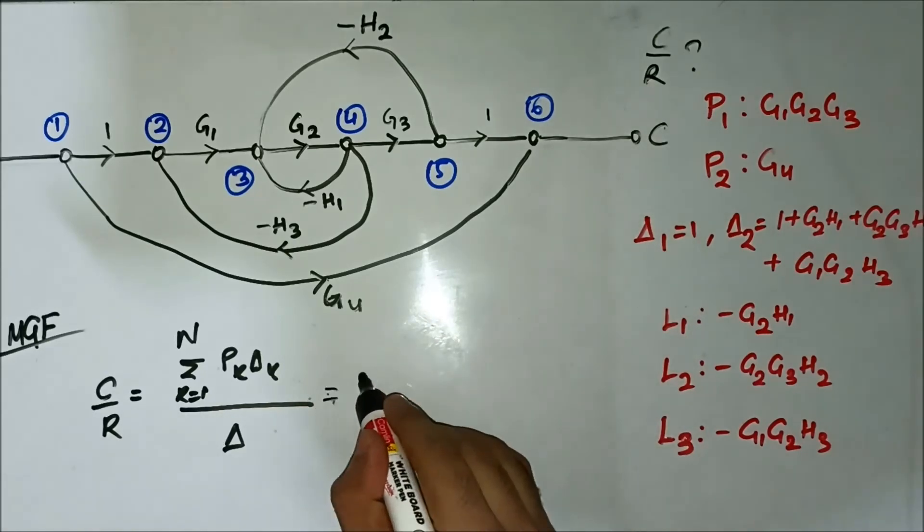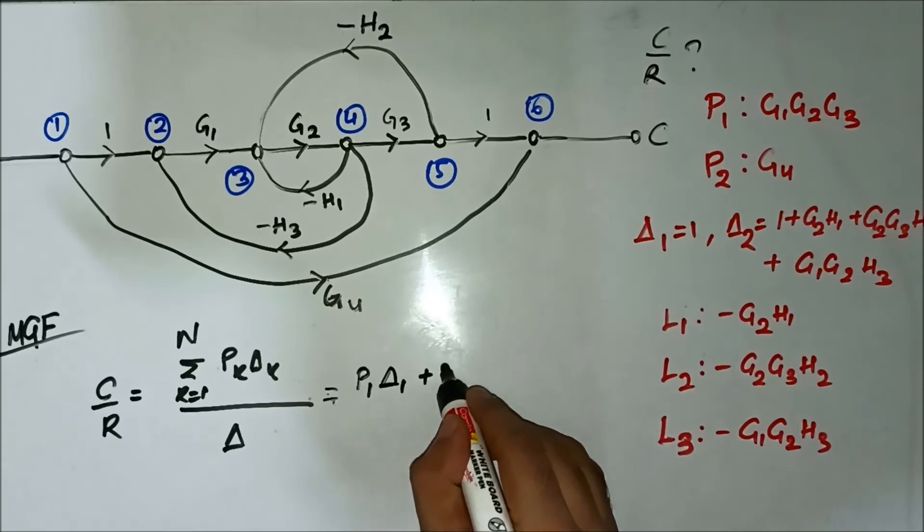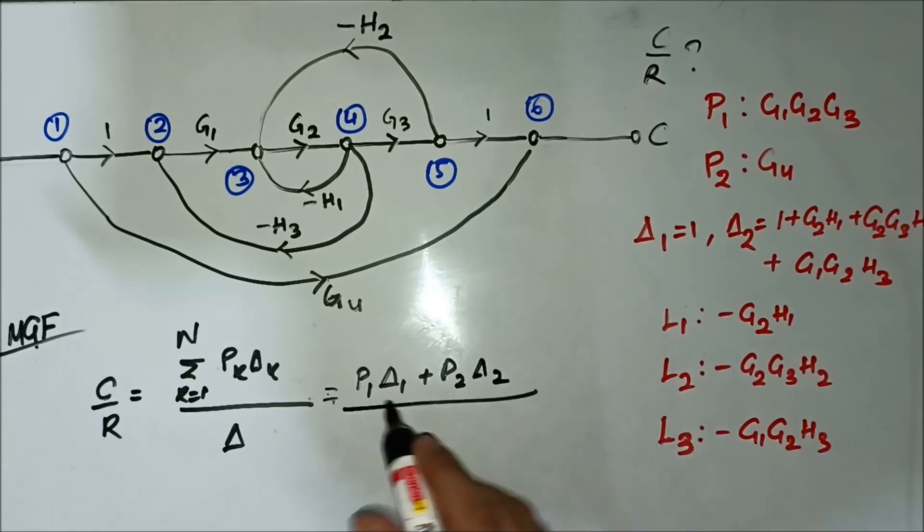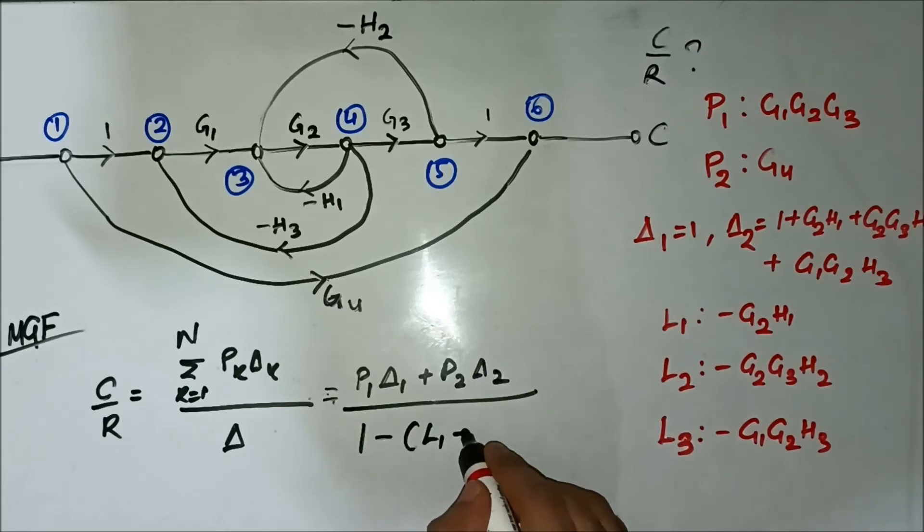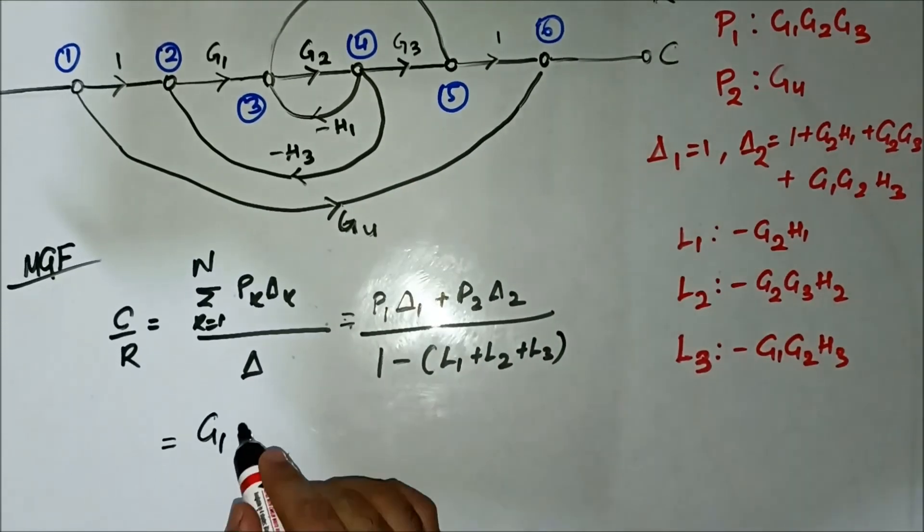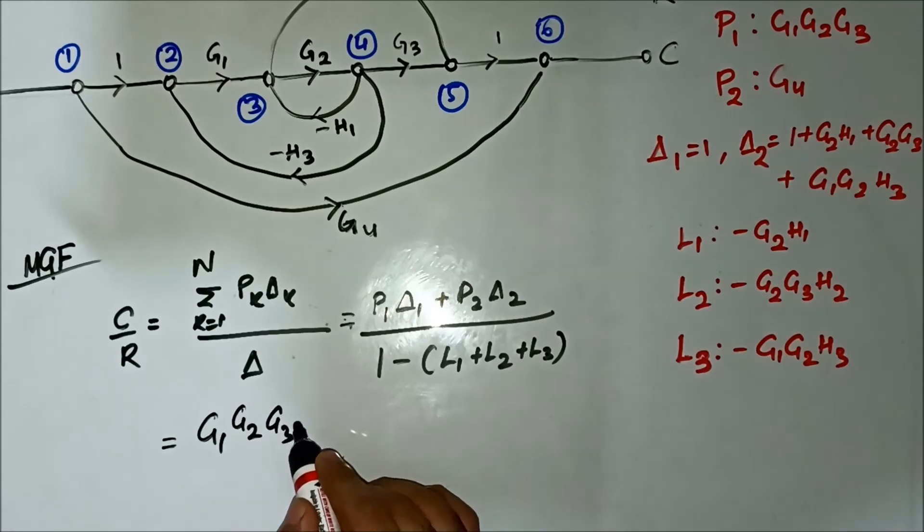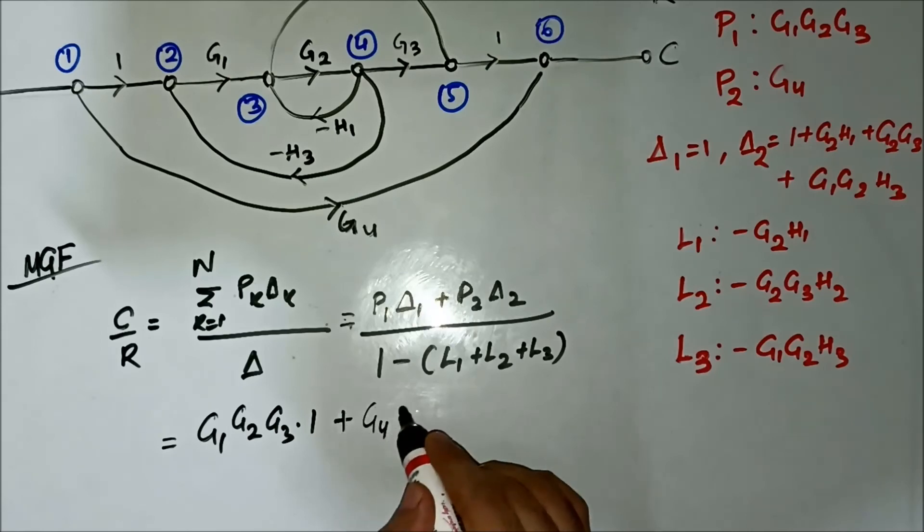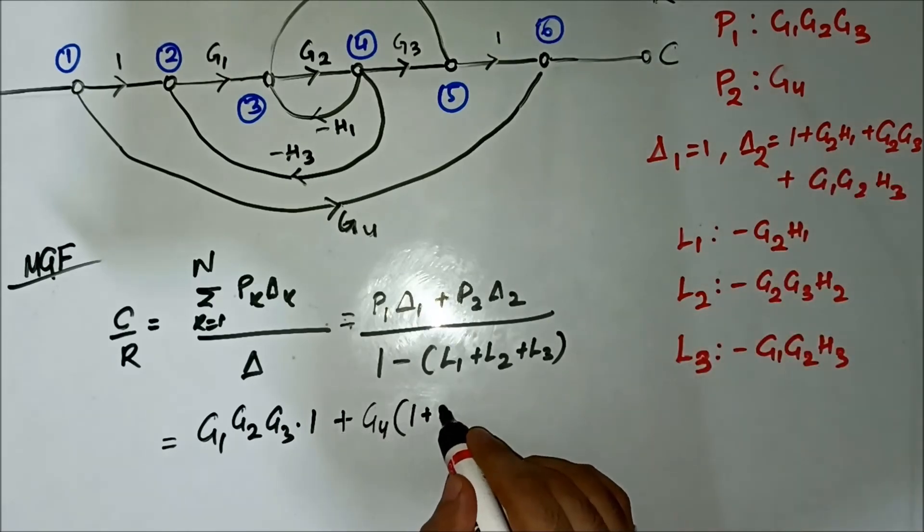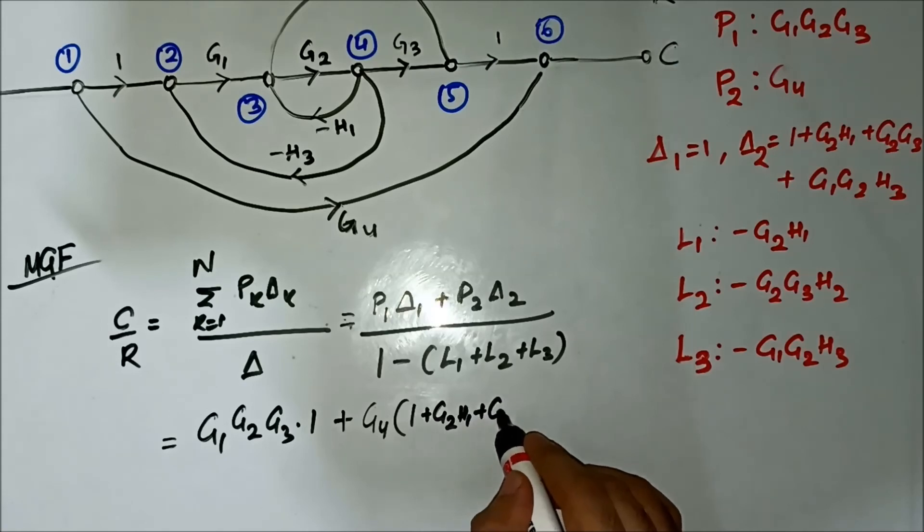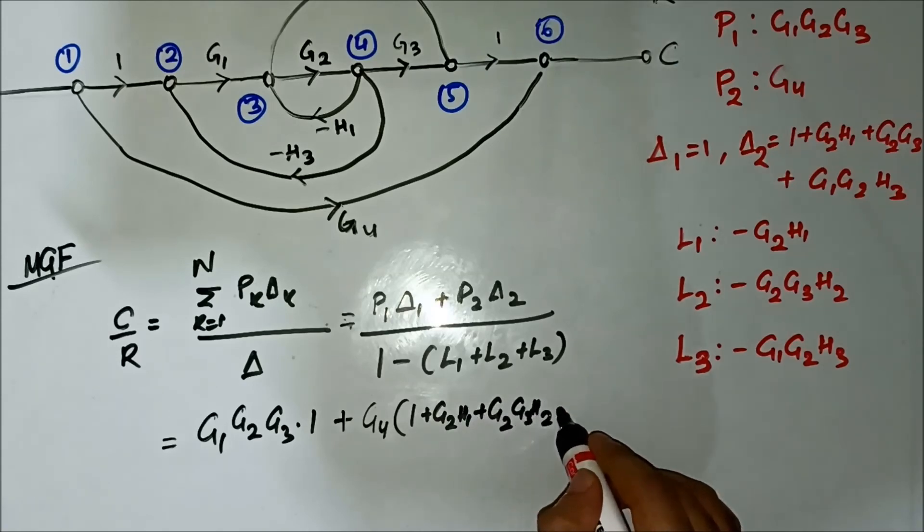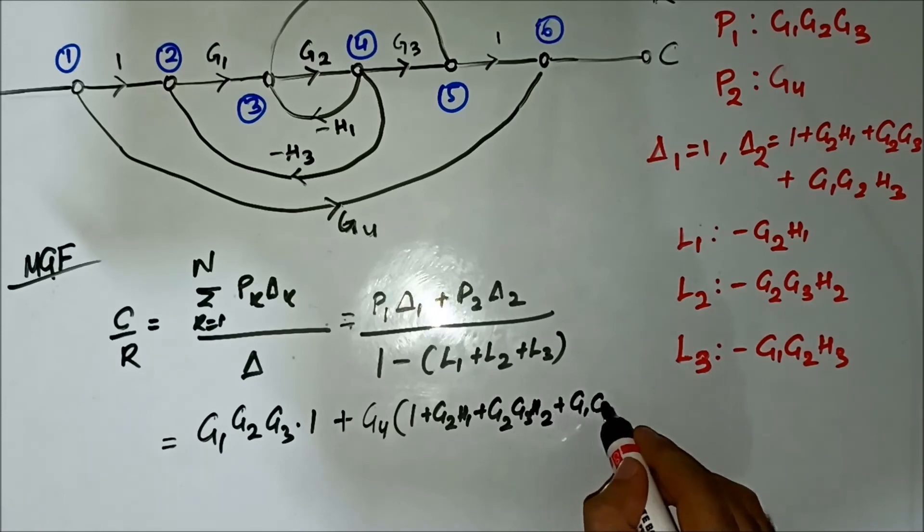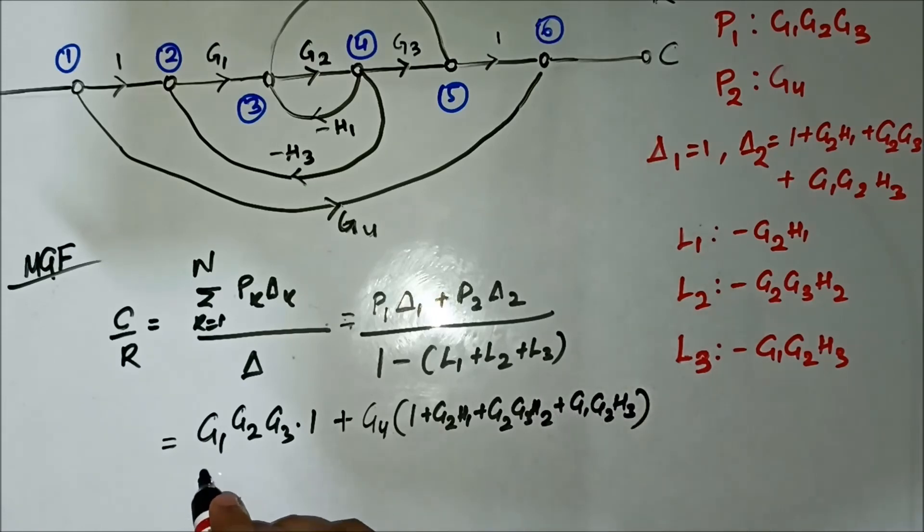It is given by P1·Δ1 plus P2·Δ2, all divided by Δ. So it is g1·g2·g3·1 plus g4·[1 + g2h1 + g2·g3·h2 + g1·g2·h3].